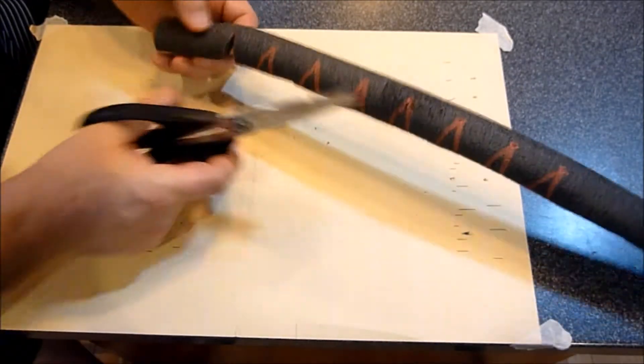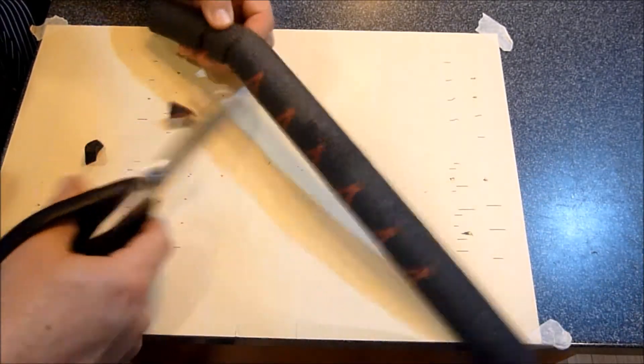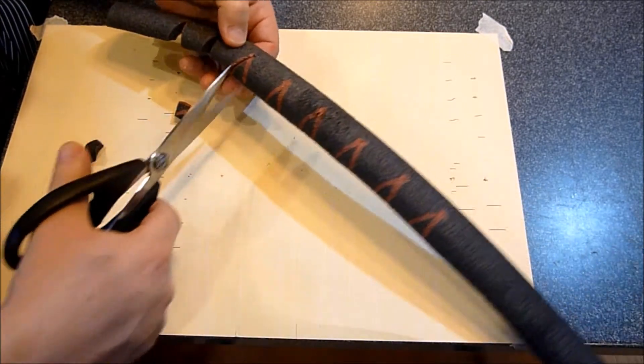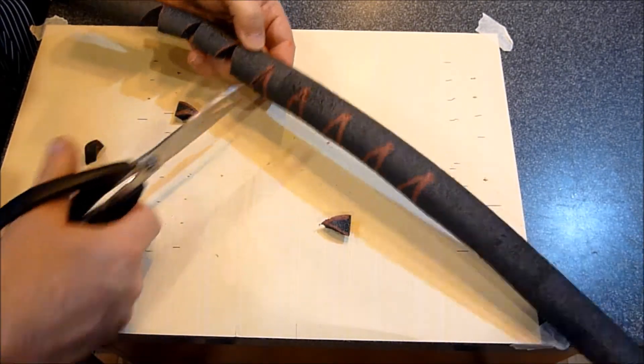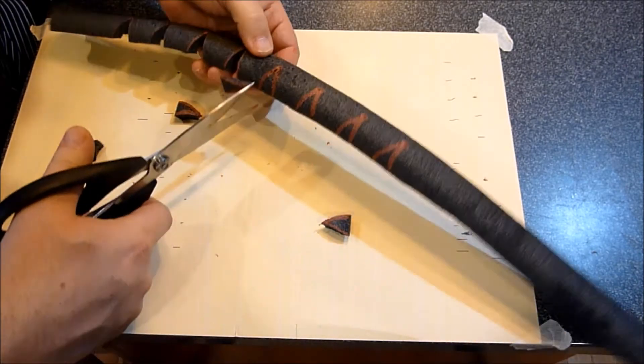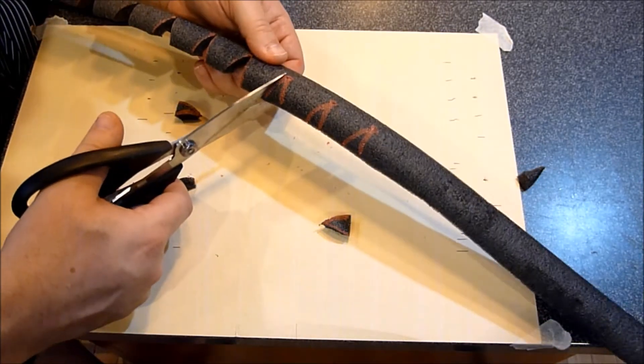Okay, once you cut all your triangles out, then it really is just a matter of working with a partner, one person holding it together and the other person taping. And then you will have a corkscrew.